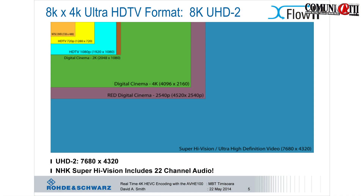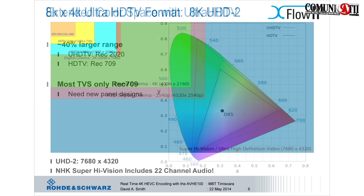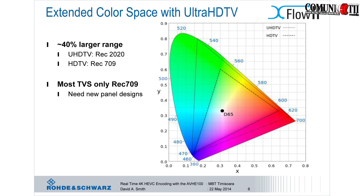One thing notable about UHD2 is it includes 22-channel audio — a nice number of speakers to have around your room. Of course, this is a lot of data, and that is the first problem. It's made even bigger because we've extended the colour space with ultra-high definition. It's not just more pixels — they're bigger and better pixels.